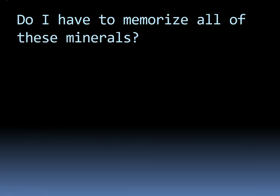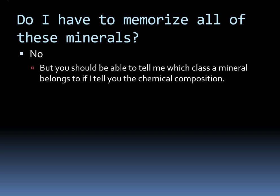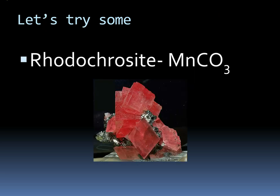You're probably asking yourself: do I need to memorize all these minerals and what category they fall into? No — I won't be that mean to you. But if I give you a mineral's composition, you should be able to tell me which class it belongs to. Let's try a few. Rhodochrosite — you saw one from the Sweet Home Mine earlier. What type of mineral is it? Rhodochrosite is a carbonate — you can see that CO3 in its formula.